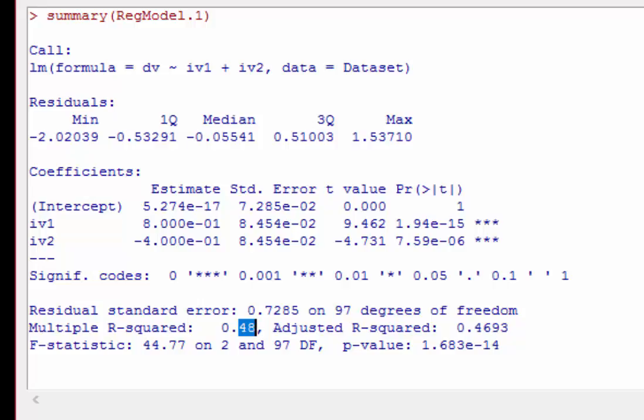48% of the variance in the dependent variable is explained by the independent variables. This is a very good multiple R-squared. Usually you're going to see in psychological research 5%, 10%, in that range, so very very good number.